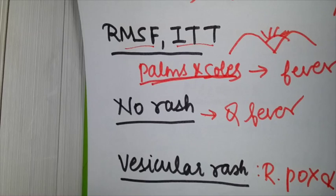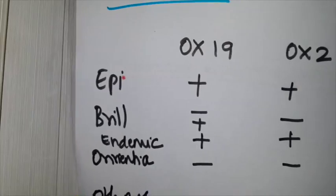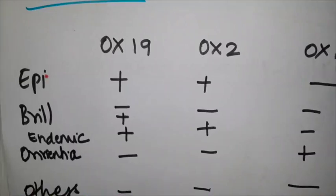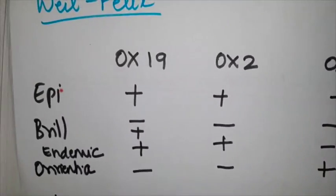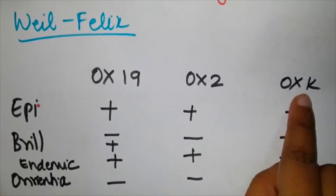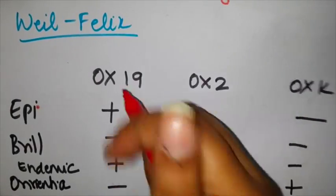Remember like this: no rash is characteristic for Q fever. Next, vesicular rash—we've already discussed that's rickettsial pox. For those who want extra info, you can also add African tick typhus. So that's differential diagnosis by rash.